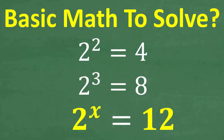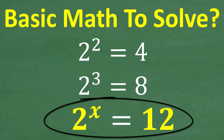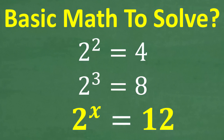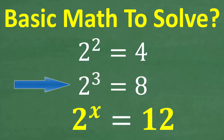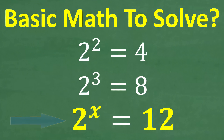The great thing about this problem is that even if you only know some basic math and a little bit of algebra, you can actually get pretty close to the right answer. Here is the problem: we have 2 to the x power is equal to 12, and we're trying to solve this equation for x. We know that 2 to the second power is equal to 4, and 2 to the third power is equal to 8. So 2 to the what power is equal to 12?